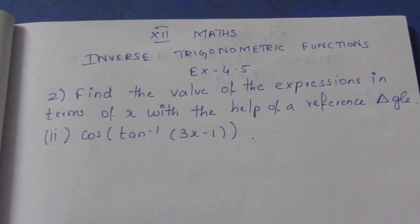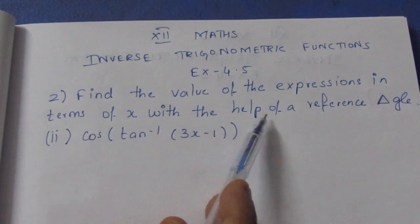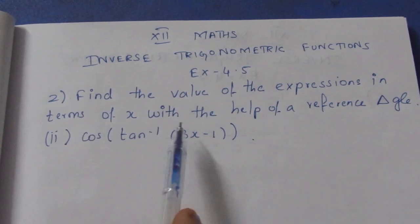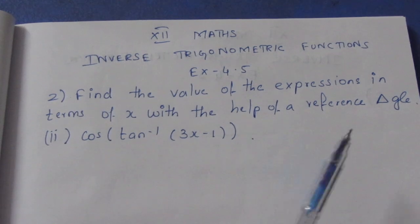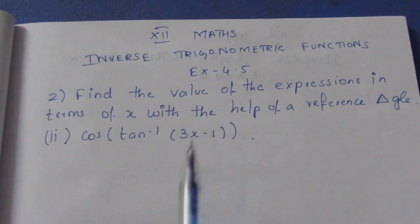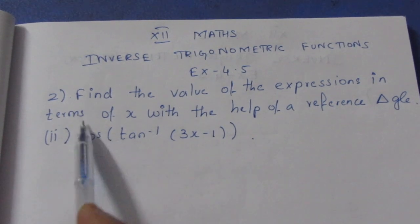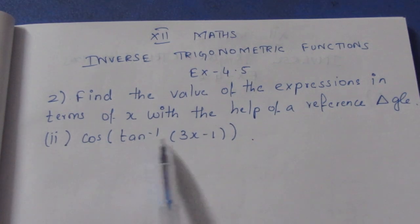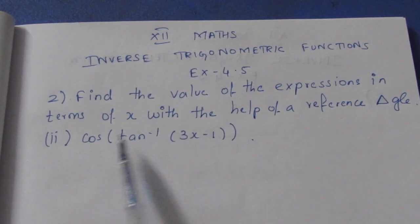In this video, we find the values of the expression in terms of x with the help of a reference triangle. We will use the reference triangle when working with x. Now we use cos(tan⁻¹(3x-1)).